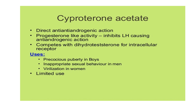The next drug is cyproterone acetate. It is a relatively weak androgen antagonist but chemically similar to progesterone. It has direct anti-androgenic action through progesterone-like activity by inhibiting luteinizing hormone, so no LH is formed, and respective sex organs show no action. It also competes with dihydrotestosterone for intracellular receptors, binding to the sites where DHT would normally bind.